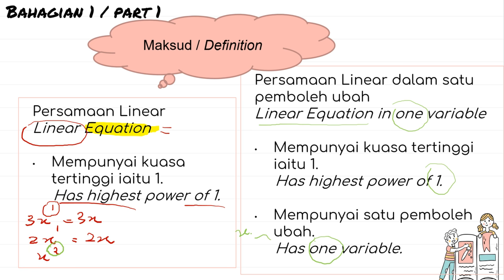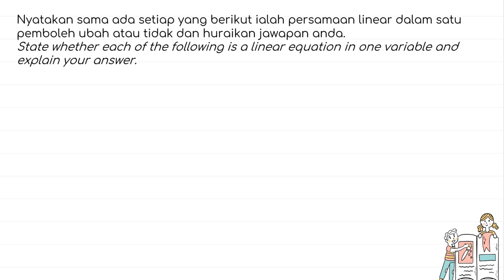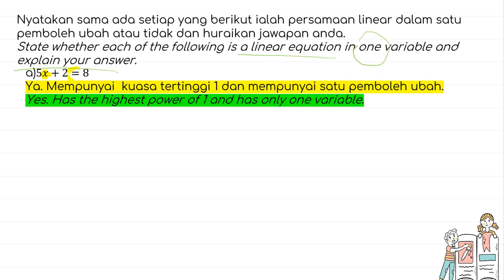Let's look at some examples to determine whether each of the following is a linear equation in one variable. The first one: 5x + 2 = 8. This is an equation because you have the 'equals to' symbol. It has only one variable, x, and x has the highest power of 1. So yes, it is a linear equation in one variable.